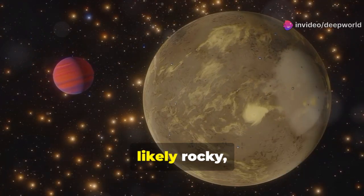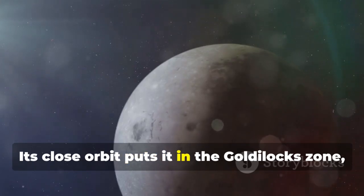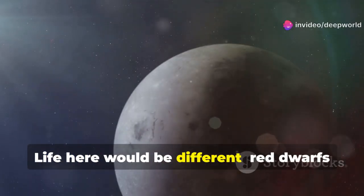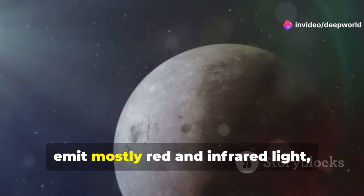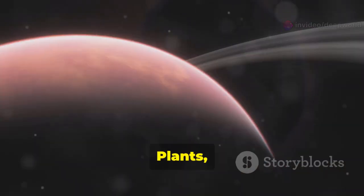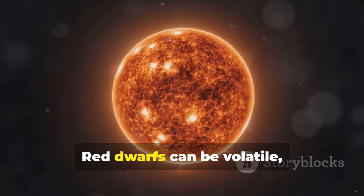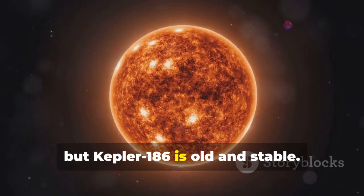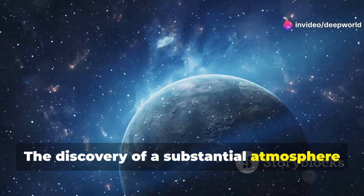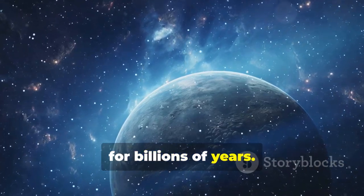Kepler-186f is Earth's cousin, 10% larger, likely rocky, with a year lasting just 130 days. Its close orbit puts it in the Goldilocks zone where liquid water could exist. Life here would be different. Red dwarfs emit mostly red and infrared light, so daylight would be a perpetual twilight. Plants, if they exist, might be black or dark red to absorb the dim light. Red dwarfs can be volatile, but Kepler-186 is old and stable.